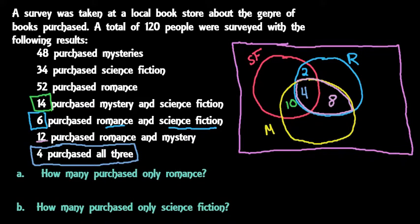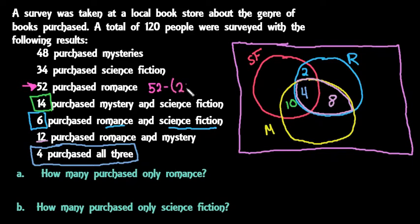Now we move to the full circles. For romance we have a total of 52. We already have 2 plus 4 plus 8, which is 14. So to find just romance, we do 52 minus 14, which gives us 38. Checking: 38 plus 8 plus 4 plus 2 equals 52, so the romance circle totals correctly.